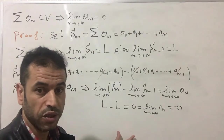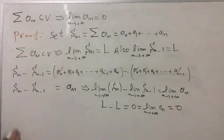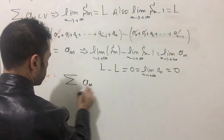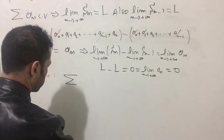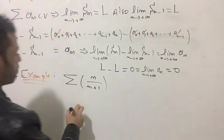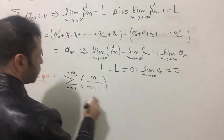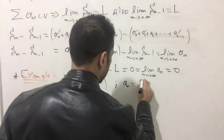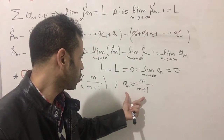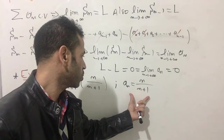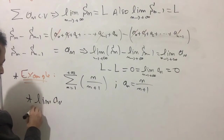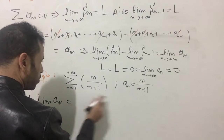Is this theorem valid all the time? We are going to see. Let's take an example: the series Σ n/(n+1) as n goes from 1 to infinity, with a_n equal to n/(n+1). I'm going to show this one is a divergent series. In order to show whether this series is convergent or divergent, we are simply going to calculate the limit of a_n as n goes to infinity.